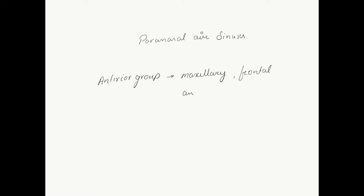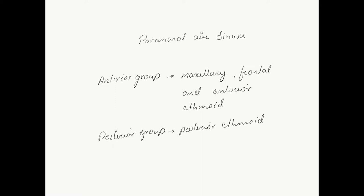The paranasal sinuses mainly include the anterior group, consisting of maxillary, frontal, and anterior ethmoid sinuses, and the posterior group consisting of posterior ethmoids and sphenoids, depending on whether they drain anteriorly or posterior to the basal lamella.